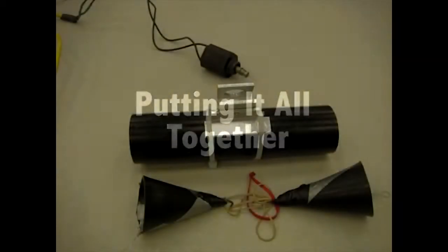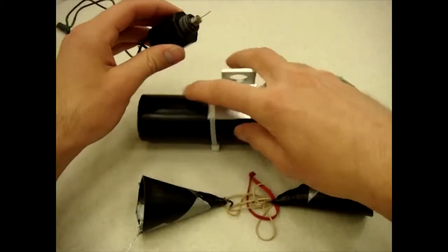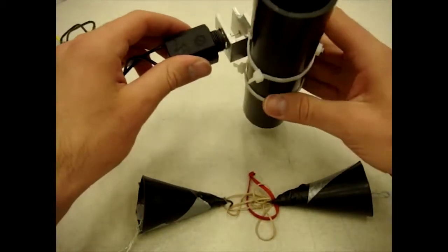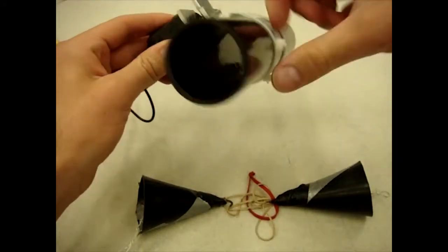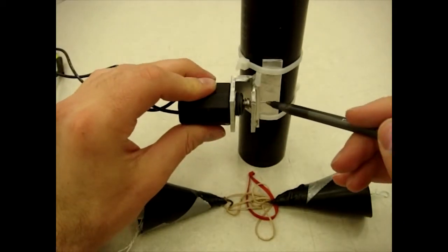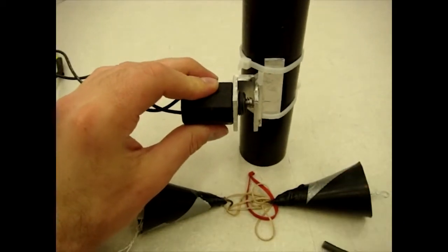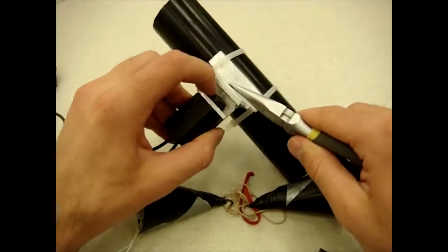Now that we have all of our different pieces of our instrument made, it is time to put it together. This is pretty simple. You first want to take your solenoid and put it into the hole of the bracket like this. The pin should be sticking out of the end.